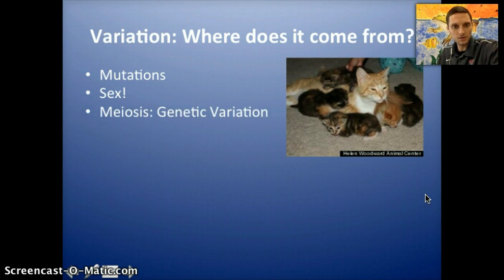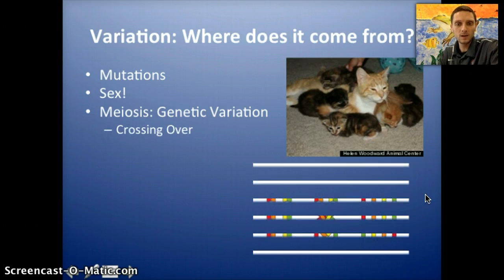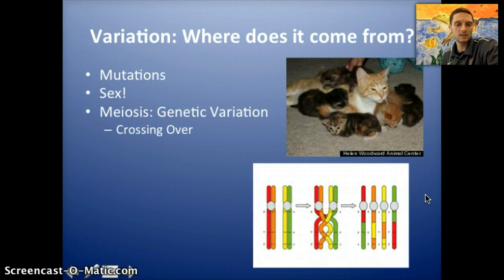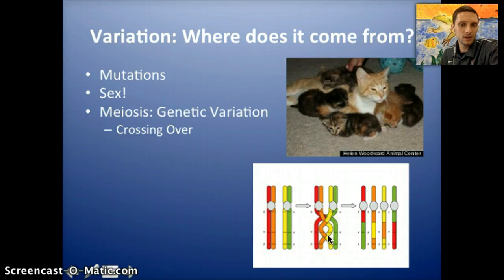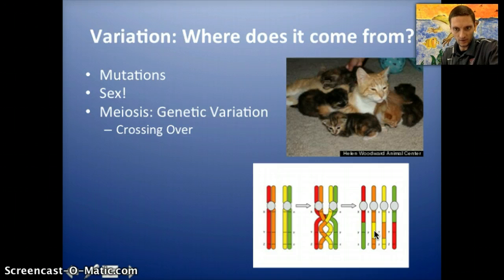Also, a good deal of this variation comes through meiosis — this is what's causing genetic variation, specifically with crossing over. In crossing over, what is happening is homologous chromosomes are actually exchanging a small portion of the arm on one of the chromosomes. It's not a mutation, but it's just mixing up those genes and alleles — a way to create even more genetic variation.